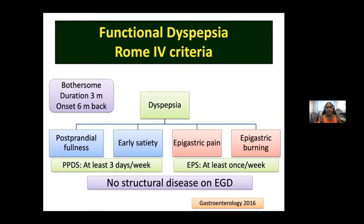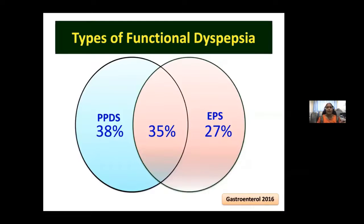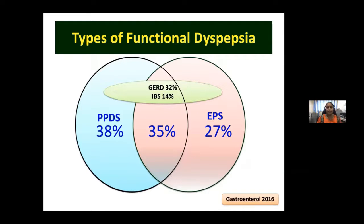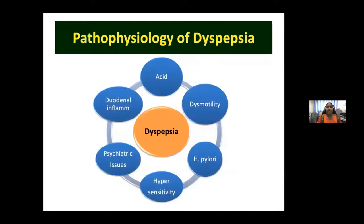On endoscopy, there should be no identifiable structural disease — structural disease meaning strictures, polyps, malignancy, or ulcers; antral gastritis alone does not qualify as structural disease. Types of functional dyspepsia: postprandial distress syndrome occupies 38 percent, epigastric pain syndrome 27 percent, and overlap between the two 35 percent. About one-third can have symptoms suggestive of GERD and 14 percent symptoms suggestive of irritable bowel syndrome.